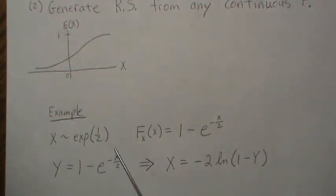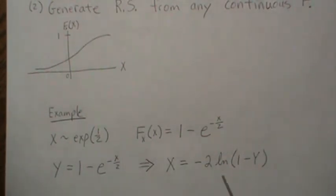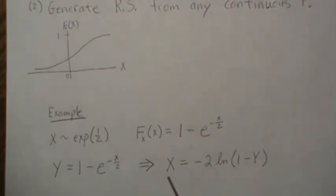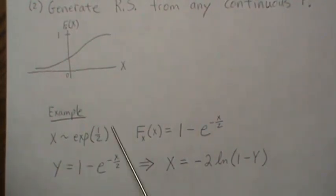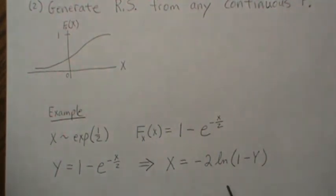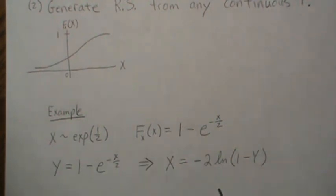And then we back solve for X, which is this. So now if we randomly generate uniform 0-1 values and plug them in here, then calculate X - that's equivalent to generating a random sample from our original population.